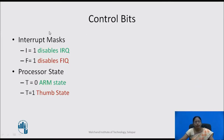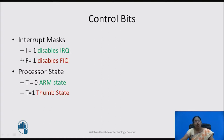The control bits include the interrupt mask bits I and F. If I is set, it indicates that the interrupt request is disabled. There are two types of interrupt requests in ARM core: fast interrupt request and interrupt request. When I equals 1, it disables the interrupt request. When F is set, it disables the fast interrupt request.